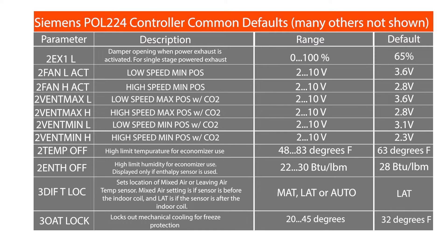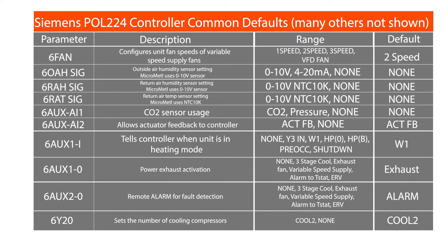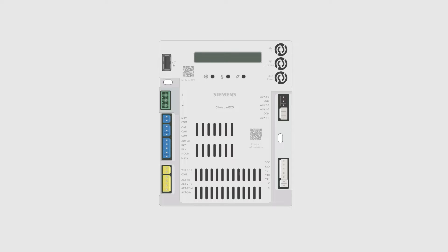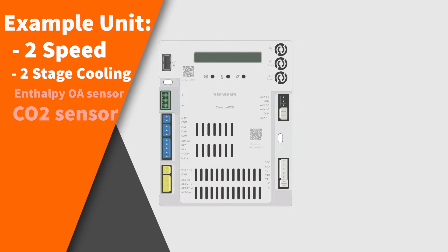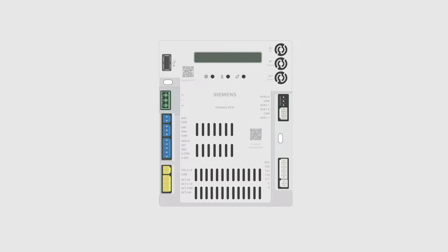The controller has defaults set for typical installations, though some units and some applications require changes from the default settings. This chart shows some of the more common controller defaults. For this example, we are going to set up a two-speed, two-stage cooling unit with an enthalpy outside air sensor and a CO2 sensor. Some settings will stay at the default settings, but this video will show you how to access changes if needed.